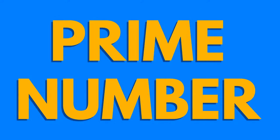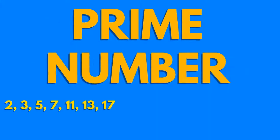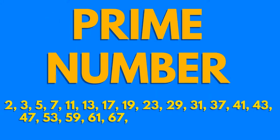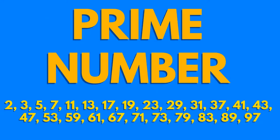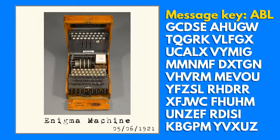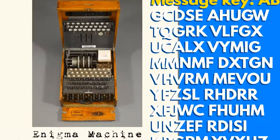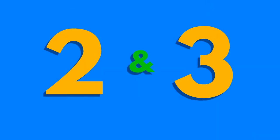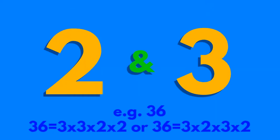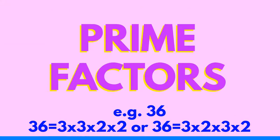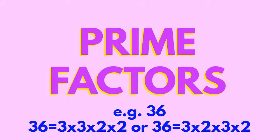A prime number is one that is divisible only by itself and one. It only ever has two factors. Prime numbers are often used in complex encryption codes. 2 and 3 are both examples of prime factors — factors that are also prime numbers.